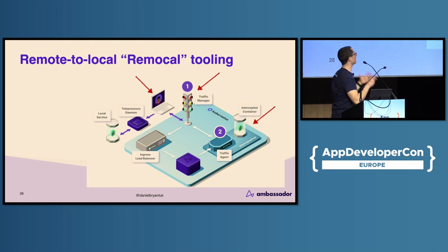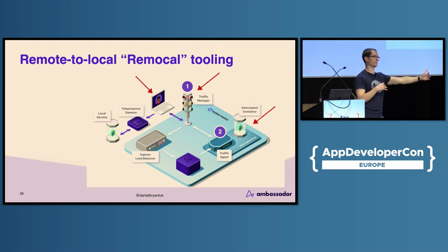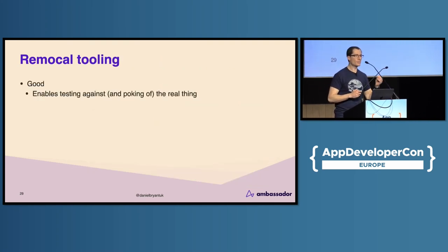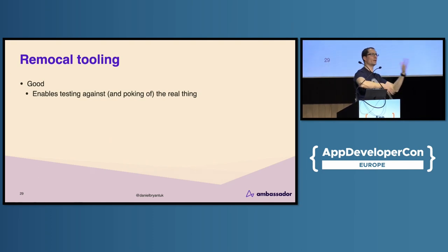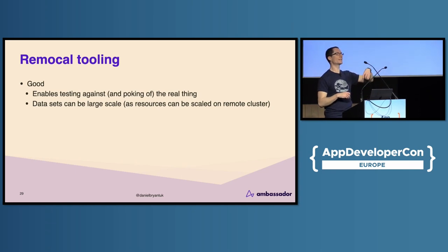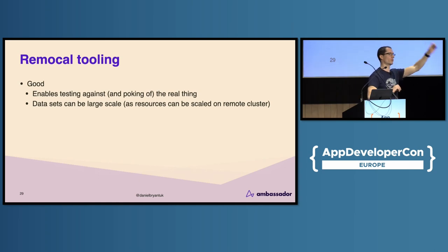The reason I like Remocal tools in a testing context is they allow me to reach into the cluster and test with the real thing. For the good: it enables testing against and poking of the real thing — you literally put your local machine effectively into the remote cluster. Datasets can be large scale. When working on Telepresence, we saw machine learning use cases with massive databases running in a Kubernetes cluster they could never hope to bring down locally — they'd use Telepresence to bridge from local to remote, run their tests, and disconnect.